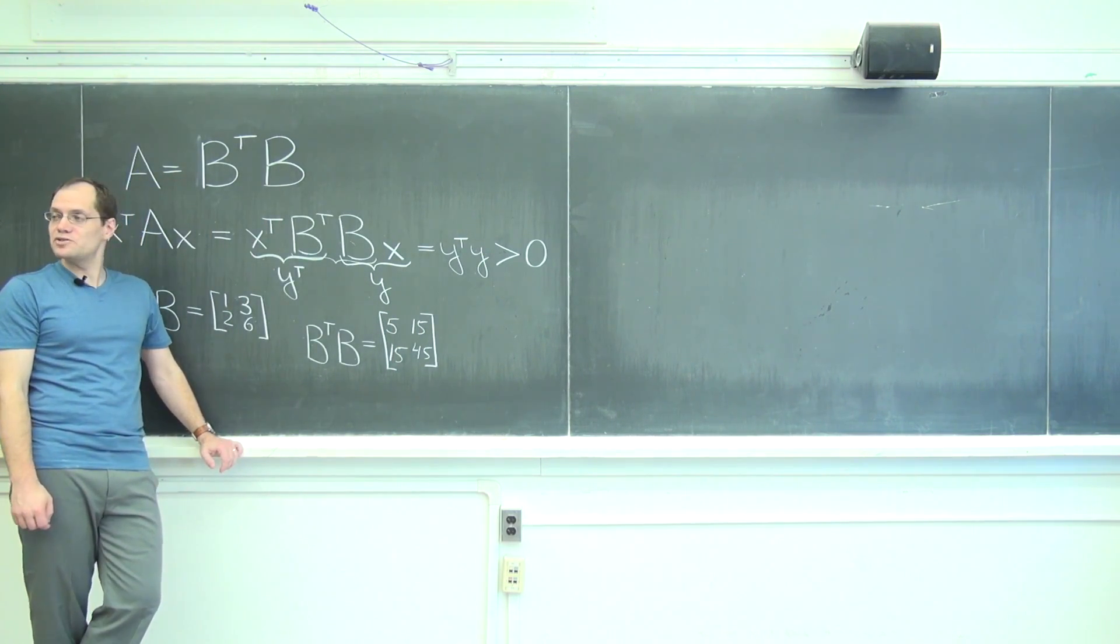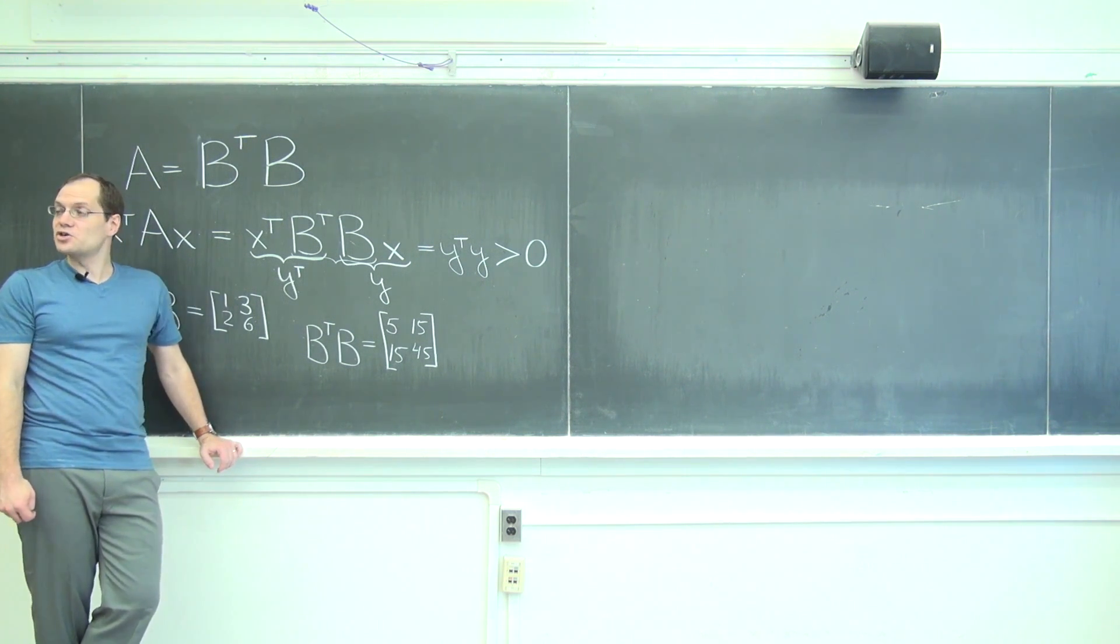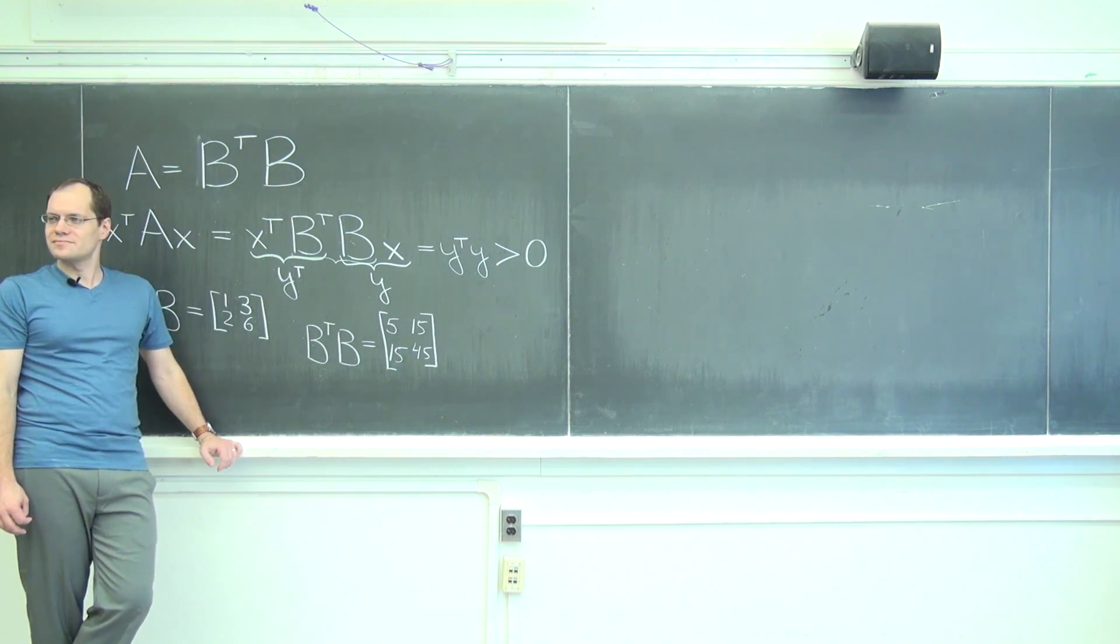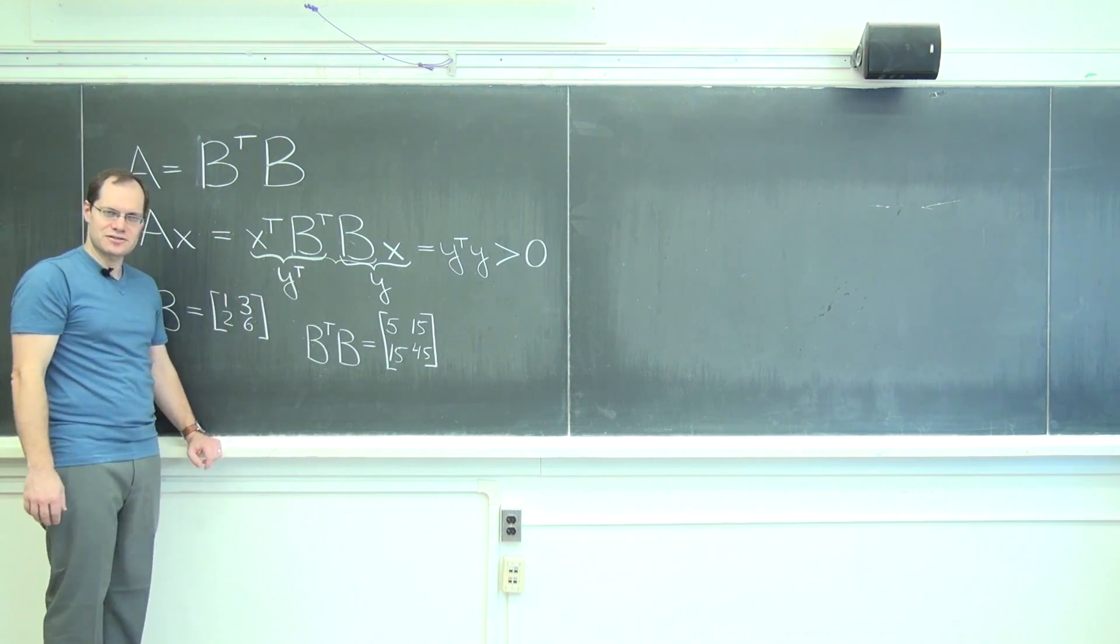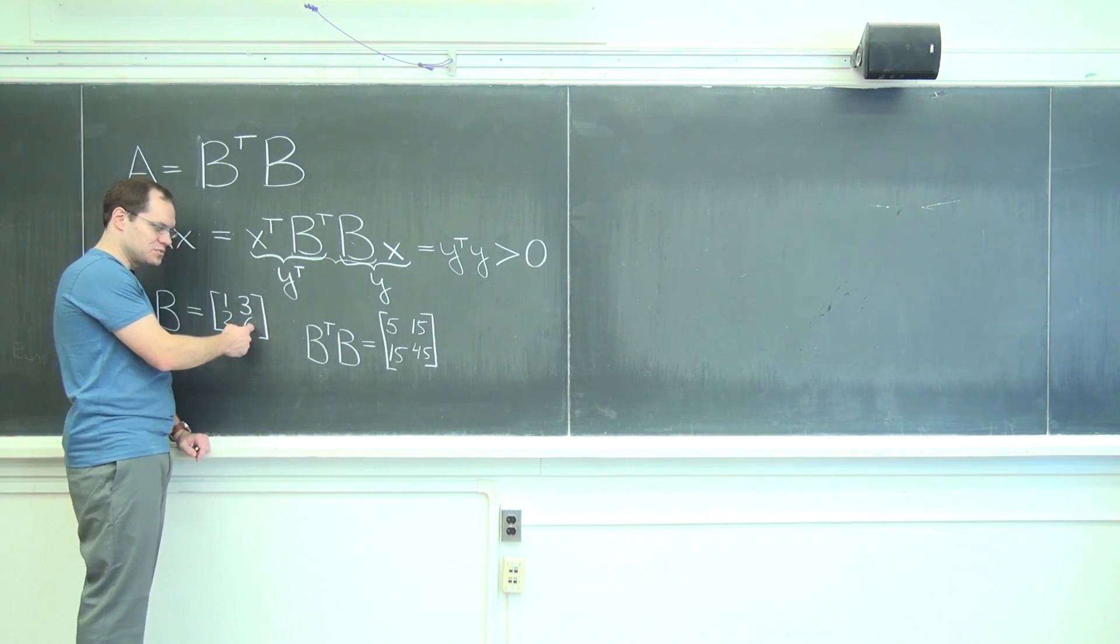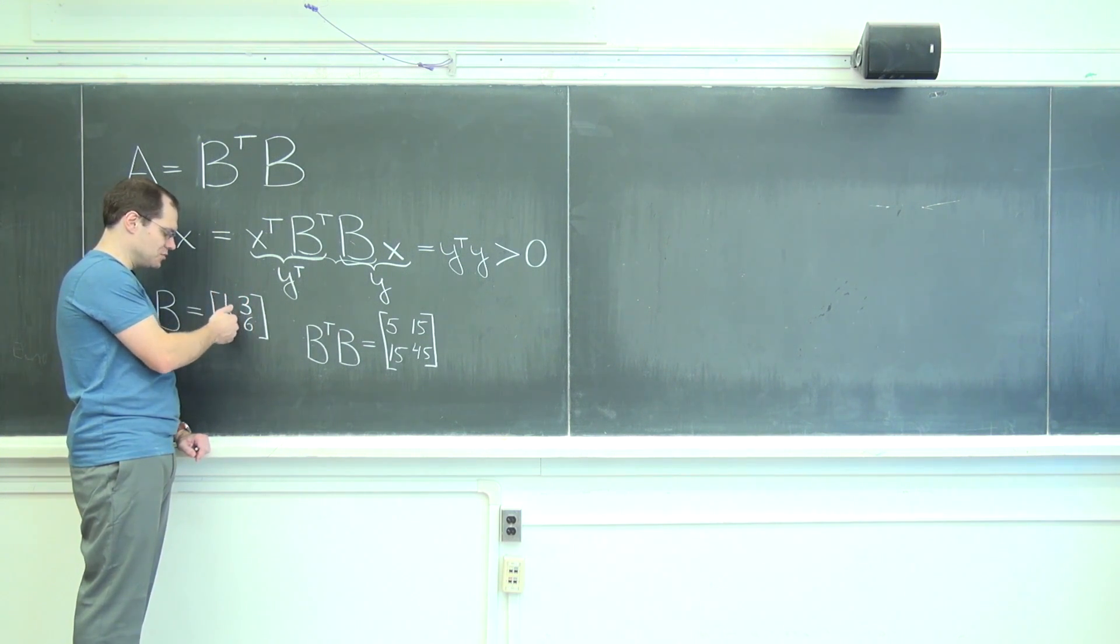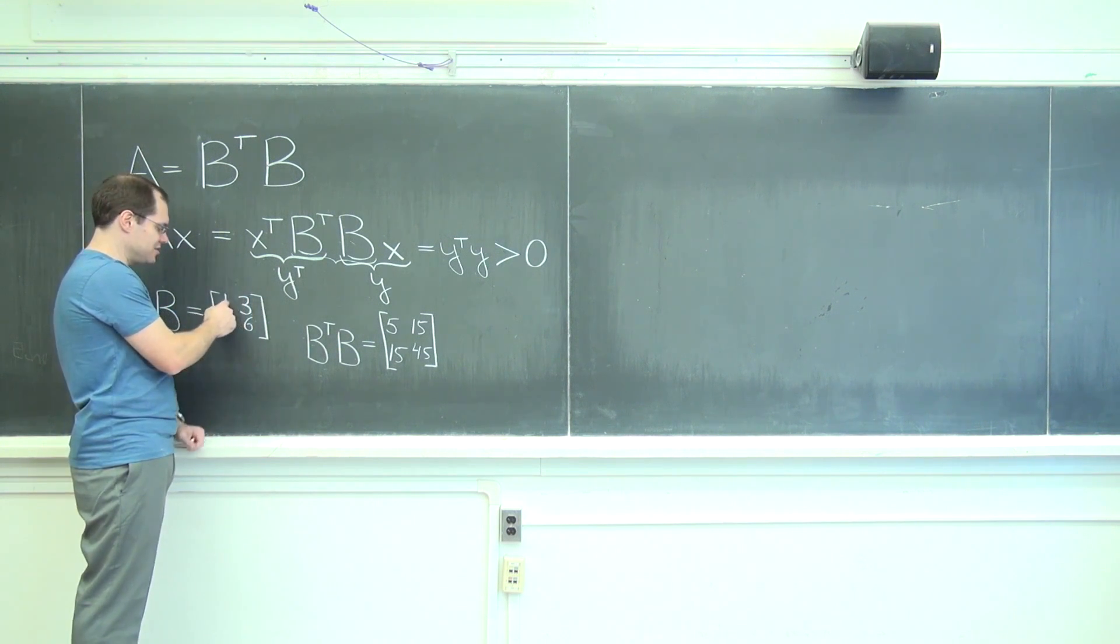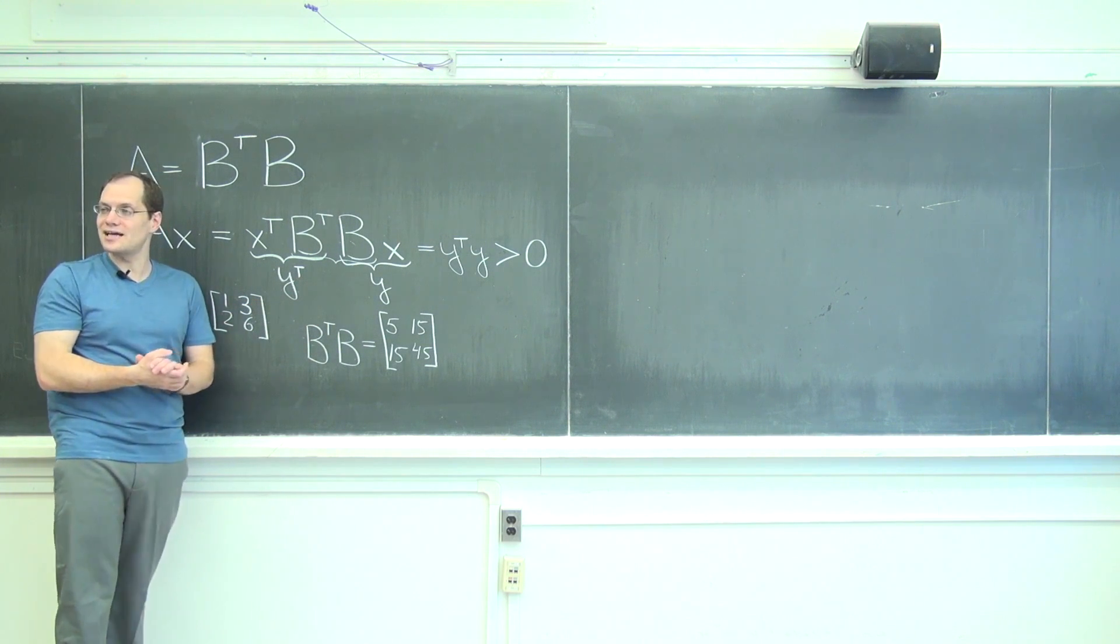That's B transpose B. By the way, as quickly as I just did it, that's how quickly everybody should be able to do it. Because I know that they're pairwise dot products of the columns of the matrix. So I dotted this with itself, 45, 9 plus 36. I dotted this with itself, 1 plus 4, 5. And then I dotted these together, 3 plus 12, 15. And those are my off diagonal ones. It's that easy.